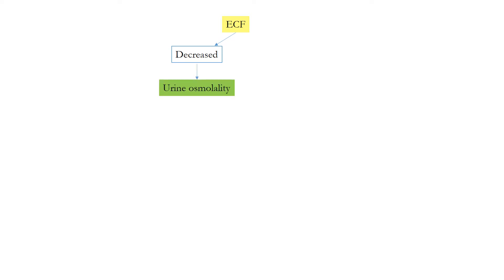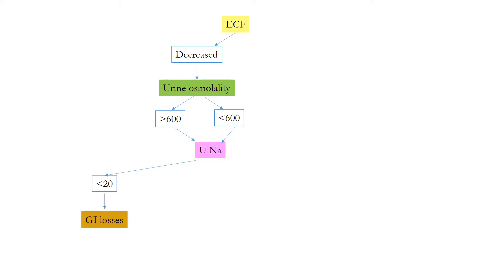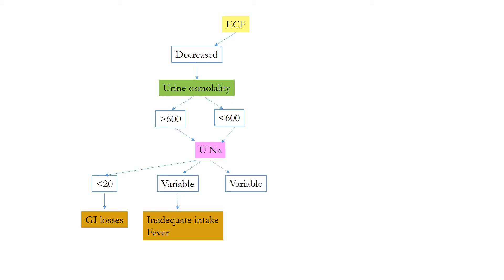If a patient has hypernatremia, first assess the extracellular fluid volume. If decreased, check urine osmolality. If urine osmolality is increased and urine sodium is less than 20, think of gastrointestinal losses. If urine osmolality is increased and urine sodium is variable, think of inadequate intake or pyrexia. If urine is dilute and urine sodium is variable, think of diabetes insipidus.